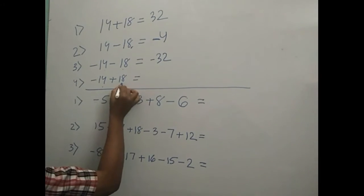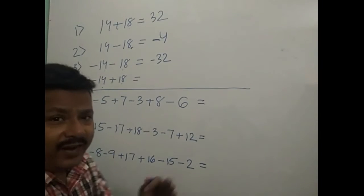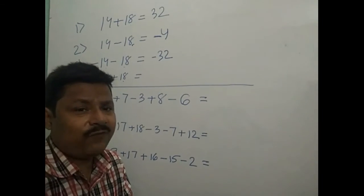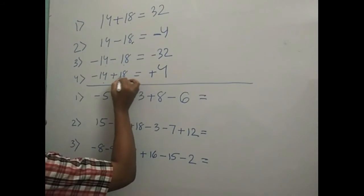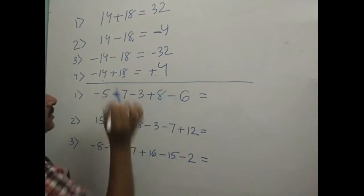Minus 14 plus 18, we again take the difference between the two. Difference is 4, but the sign will be plus. 18 sign is plus, this sign is equal to plus.